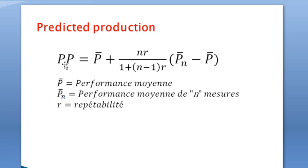Therefore, we have predicted production equals the overall mean of the performance or of the population plus this quantity, where P̄n equals the average performance of n measurements, and r equals the repeatability of the trait.